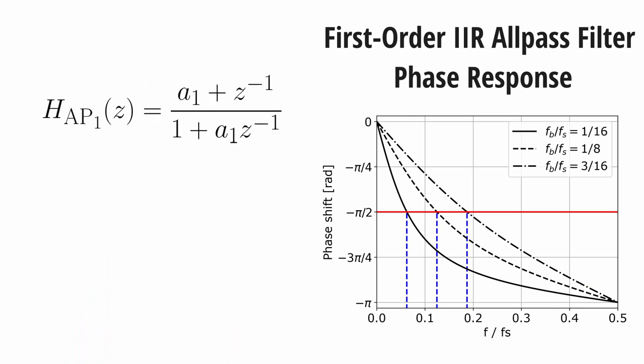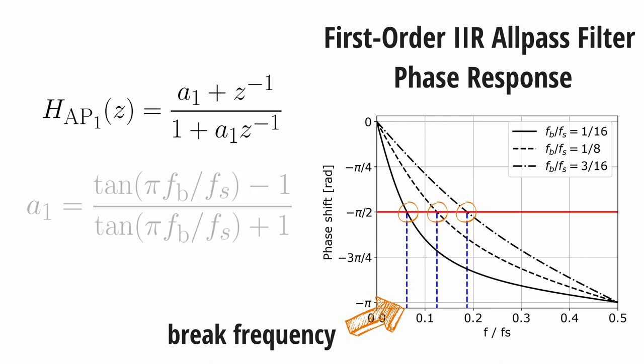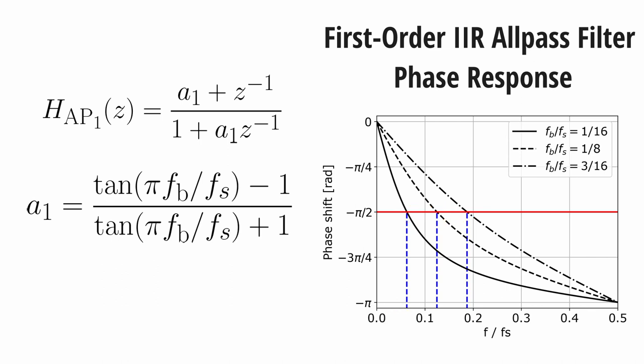You definitely remember the A1 coefficient from the transfer function of the first-order ALLPASS filter. This A1 coefficient controls what is called the break frequency of the ALLPASS filter. In the context of the first-order ALLPASS filter, the break frequency denotes the frequency at which the phase delay is exactly minus pi over 2 radians. Here is the formula for the A1 coefficient. This formula is derived using the bilinear transform from the transfer function of the analog, so not digital, ALLPASS filter.